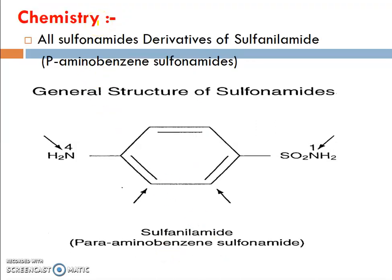Chemistry behind the sulfonamide: all sulfonamides are derivatives of sulfanilamide. This is the most important point, and may be asked in GPAT-like examinations. Sulfonamide is the derivative of sulfanilamide, which is nothing but para-aminobenzene sulfonamide.